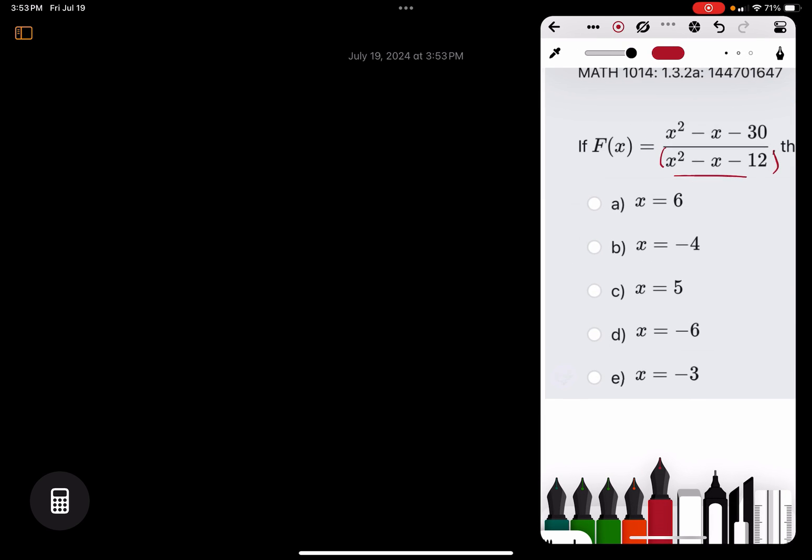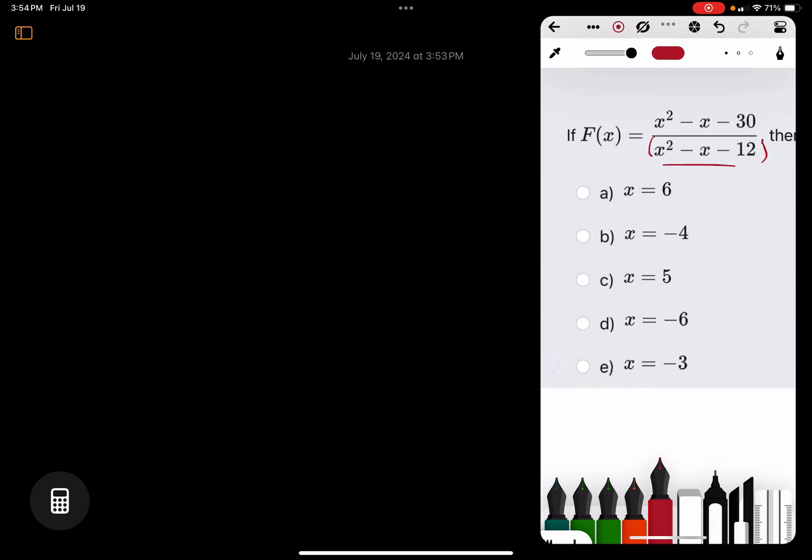Looking back at the problem again, we are essentially plugging and chugging these x values to see which one makes the denominator equal to zero. So starting with this approach, we could label a, b, c, d, and e, the x values in a, b, c, d, and e.